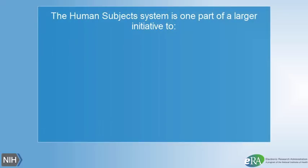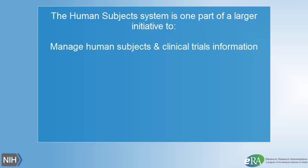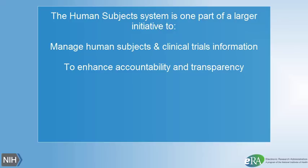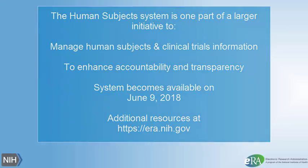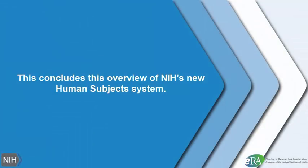The new system is one part of a larger initiative to help NIH manage human subjects and clinical trials information in a way that enhances the accountability and transparency of clinical research that it funds. Once the system becomes available on June 9, 2018, look for additional resources on using the system at era.nih.gov. This concludes this overview of NIH's New Human Subjects System. Thank you for watching.